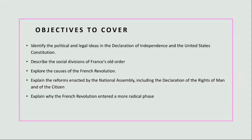France's old order was marked by stark social divisions. Society was divided into three estates: the first estate consisted of the clergy, the second estate of the nobility, and the third estate, which included the commoners, made up the majority of the population. This arrangement fostered profound inequalities, with the first and second estates enjoying privileges such as exemption from taxes, while the third estate bore the financial burden of the state. These inequalities were exacerbated by economic disparities, with the urban bourgeoisie and the rural peasantry suffering from heavy taxation and exploitation. The social divisions created simmering discontent and laid the groundwork for the revolution to come.